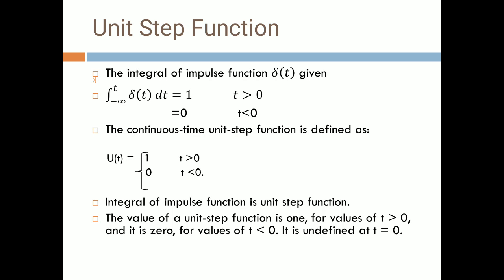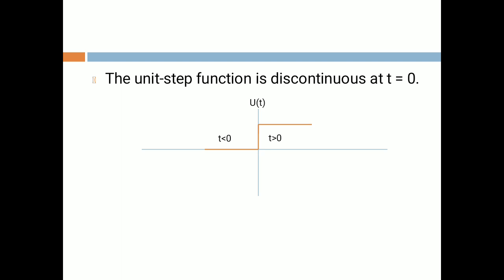The unit step function is the integral of the impulse function delta(t). It is defined as: u(t) = 1 when t ≥ 0, and u(t) = 0 when t < 0. So whenever time is greater than 0, it is always 1, and when time is less than 0, it is 0. The continuous-time unit step function u(t) = 1 for t > 0, and 0 for t < 0.